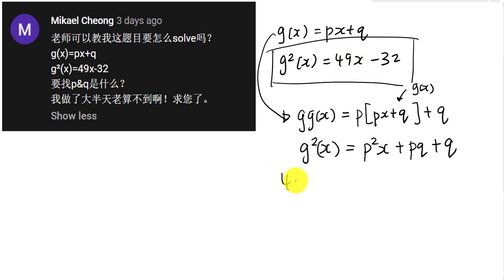And what is the g²(x) according to what you have here? It will be 49x minus 32. So 49x minus 32.